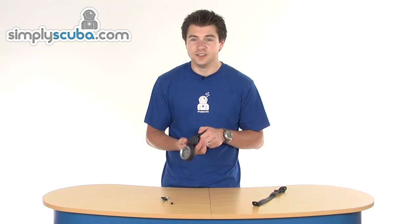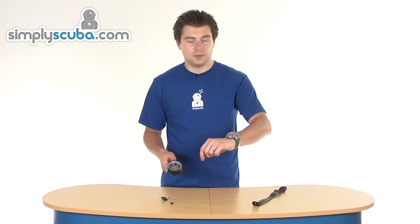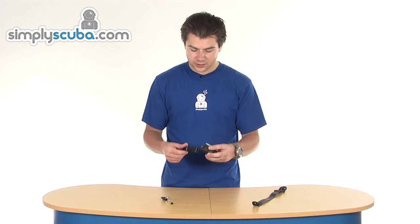It gives you a weighted compass so it's always negatively buoyant. On the end of a nice easy retractor, clips into place, keeps it secure, keeps your wrist a bit more free. That's the Suunto SK7 retractor.